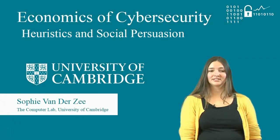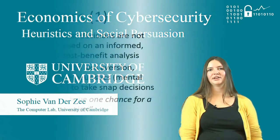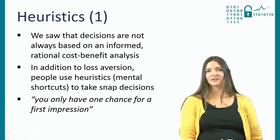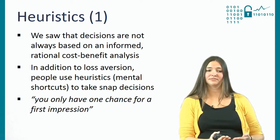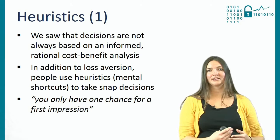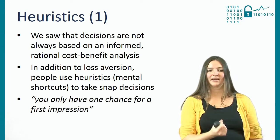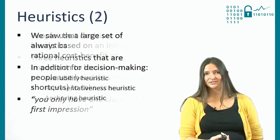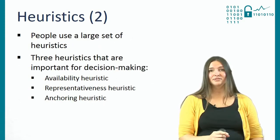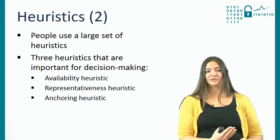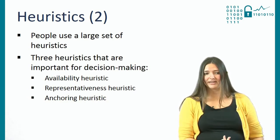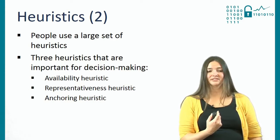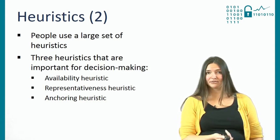In the last section we saw that decisions are not always based on an informed rational cost-benefit analysis. In addition to loss aversion and prospect theory, people also make heuristics, which are mental shortcuts that people use to take snap decisions. People use a very large set of heuristics and I'm going to describe the three that are very important for decision-making: the availability heuristic, the representativeness heuristic, and the anchoring heuristic.